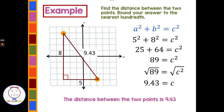So C equals 9.43, and that makes sense. If one leg is five and the other is eight, we expect the hypotenuse to be bigger than eight — and this diagonal line does look just a little bit longer. So 9.43 is reasonable. 89 would not be a reasonable length for that hypotenuse — these two points are not 89 apart if the legs are five and eight. Make sure your answer makes sense.